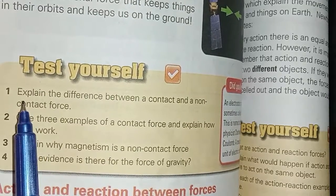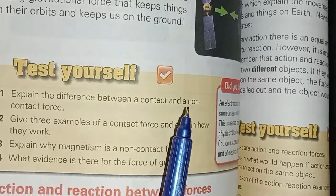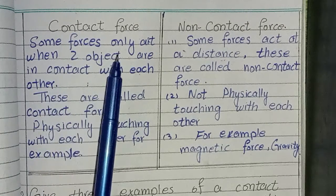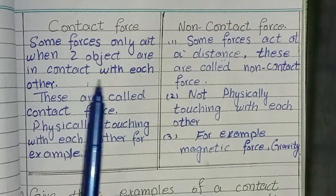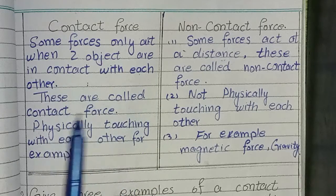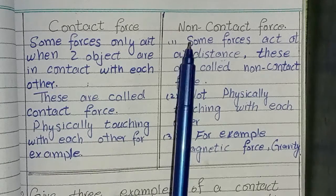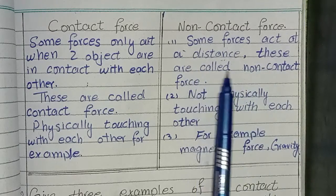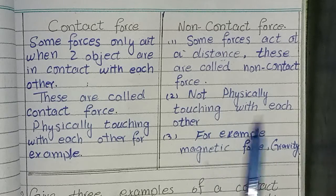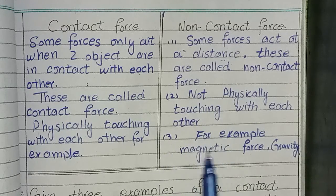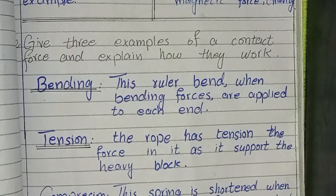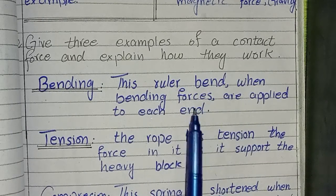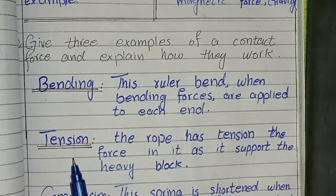Fourth test yourself which is page number 114. This is the first question: explain the difference between a contact and a non-contact force. We write difference: some forces only act when two objects are in contact with each other, these are called contact force, physically touching with each other. Non-contact force: some forces act at a distance, these are called non-contact force, not physically touching with each other, for example magnetic force, gravity. Second question: give three example of a contact force and explain how they work. Bending: this ruler bent when bending forces are applied to each end. Tension: the rope has tension force in it as it supports the heavy block. Compression: the spring is shortened when a compression force is applied.